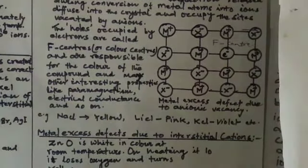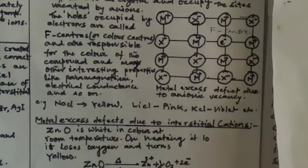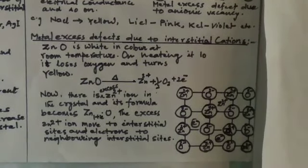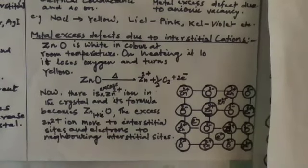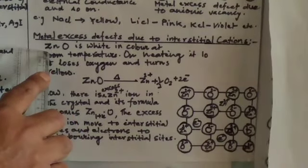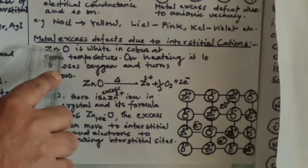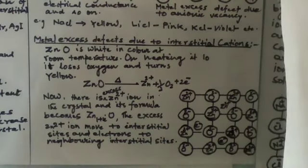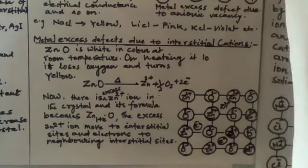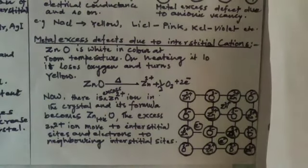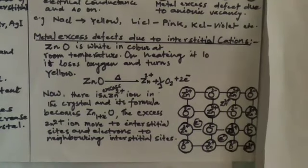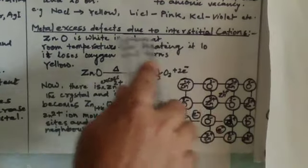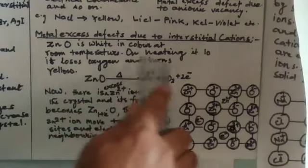The second metal excess defect is due to the presence of an extra cation in the interstitial site. A very common example, well explained in the NCERT book, is zinc oxide. Zinc oxide is a white compound at room temperature because its d-orbital is completely filled. But on heating, it turns yellow. On heating, zinc oxide loses oxygen and turns yellow, as shown by the chemical equation: ZnO on heating forms a zinc ion and oxygen is released into the atmosphere, leaving behind two electrons.